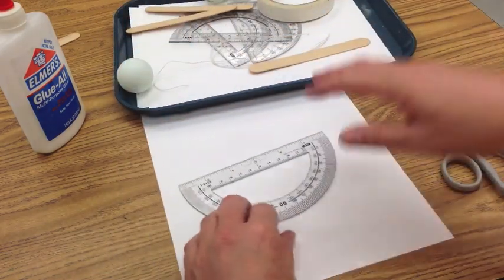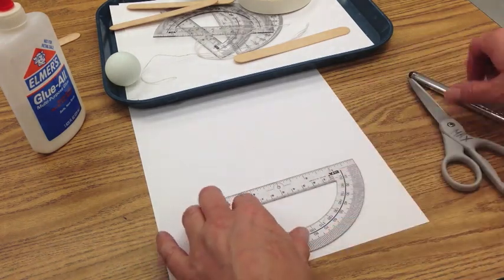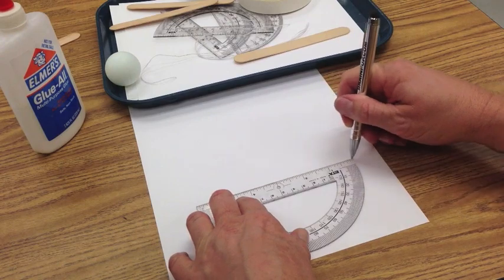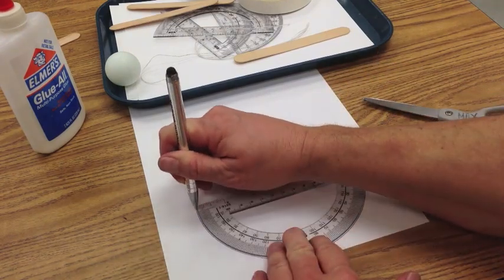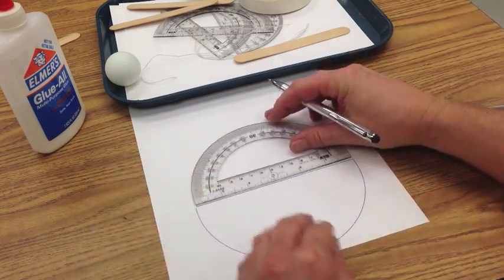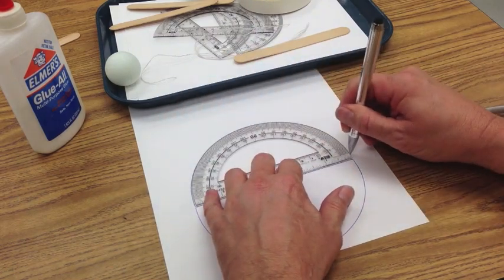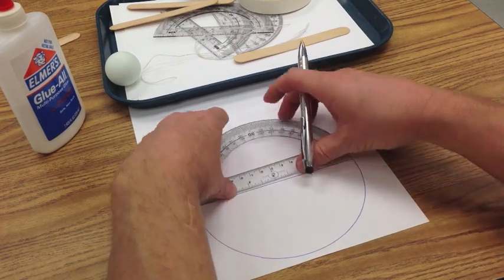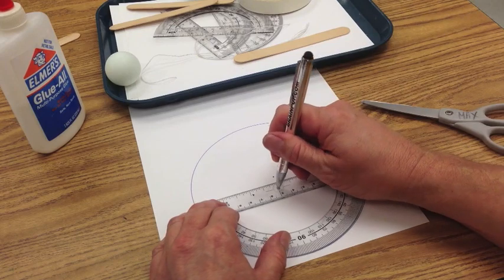So, take your protractor, line it up down here at the bottom, and using a pen, go ahead and trace it carefully, like that. Then flip it over, trace it again. Then go in and put a dot in the center point. Flip it over, dot in the center point.